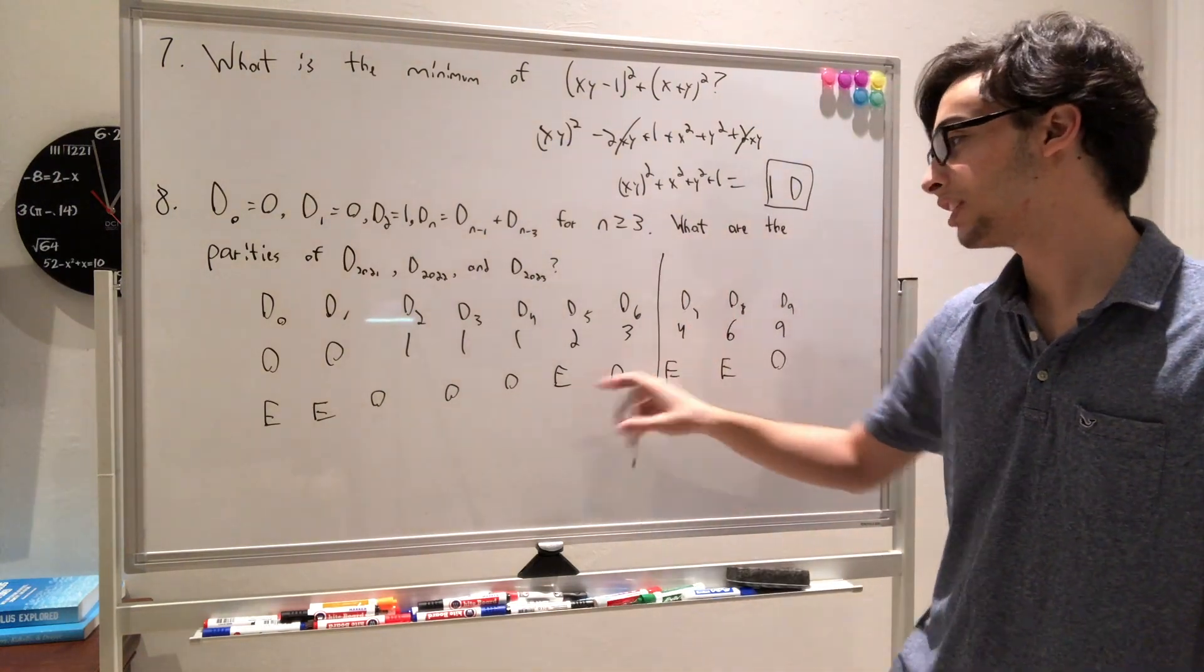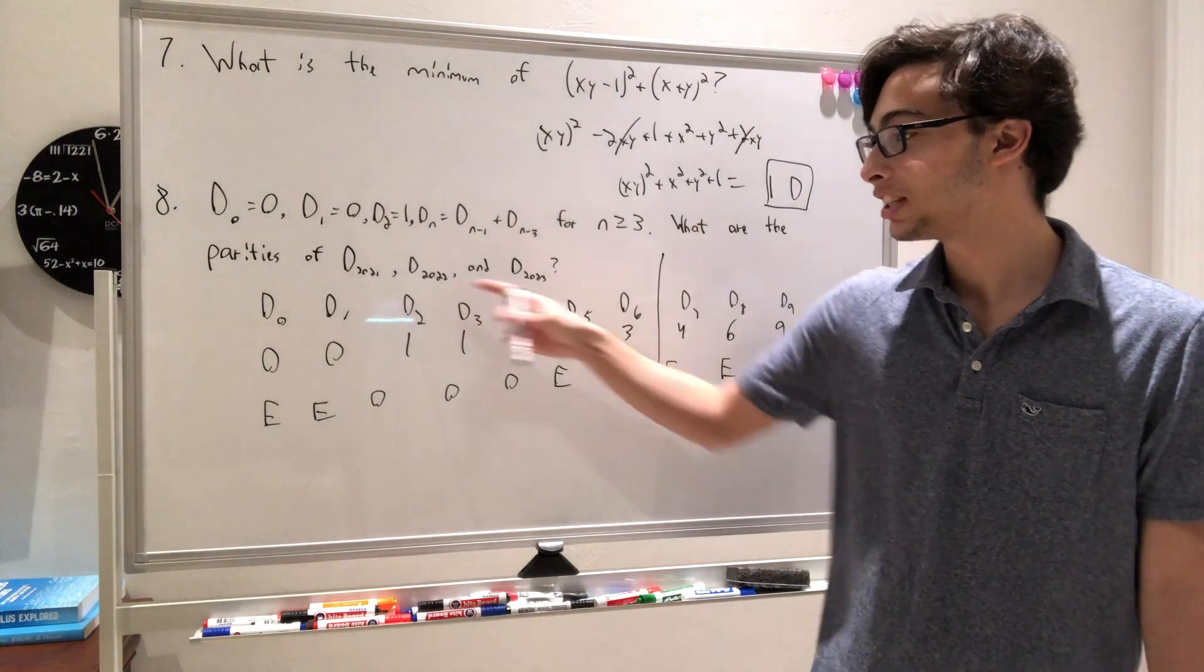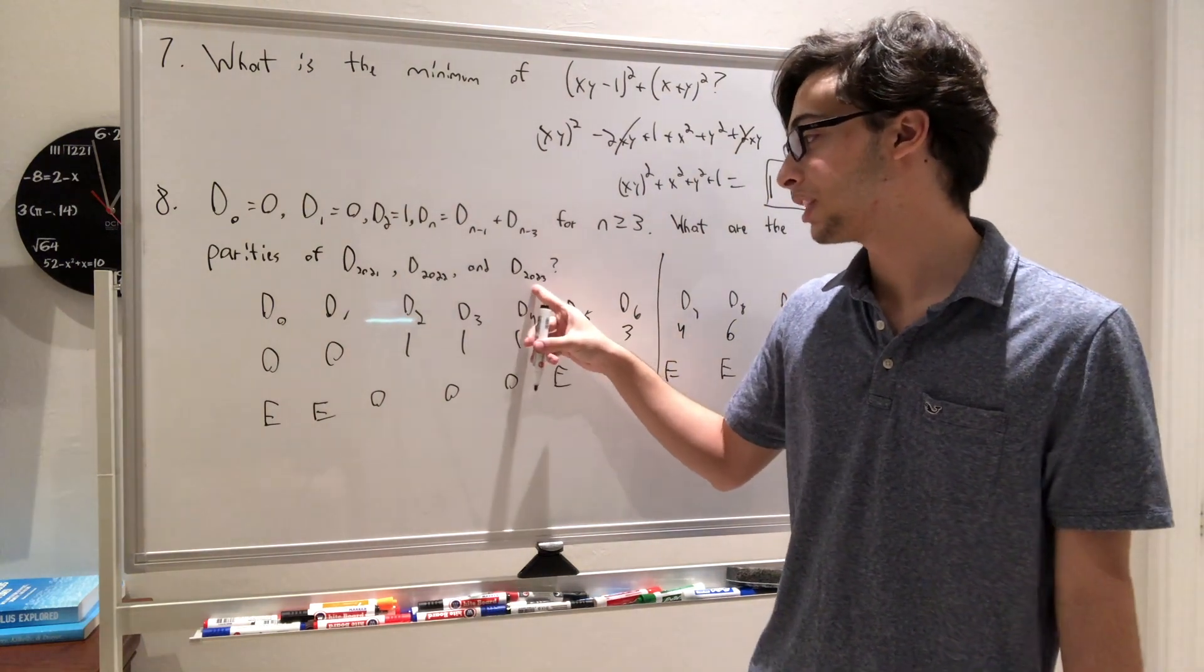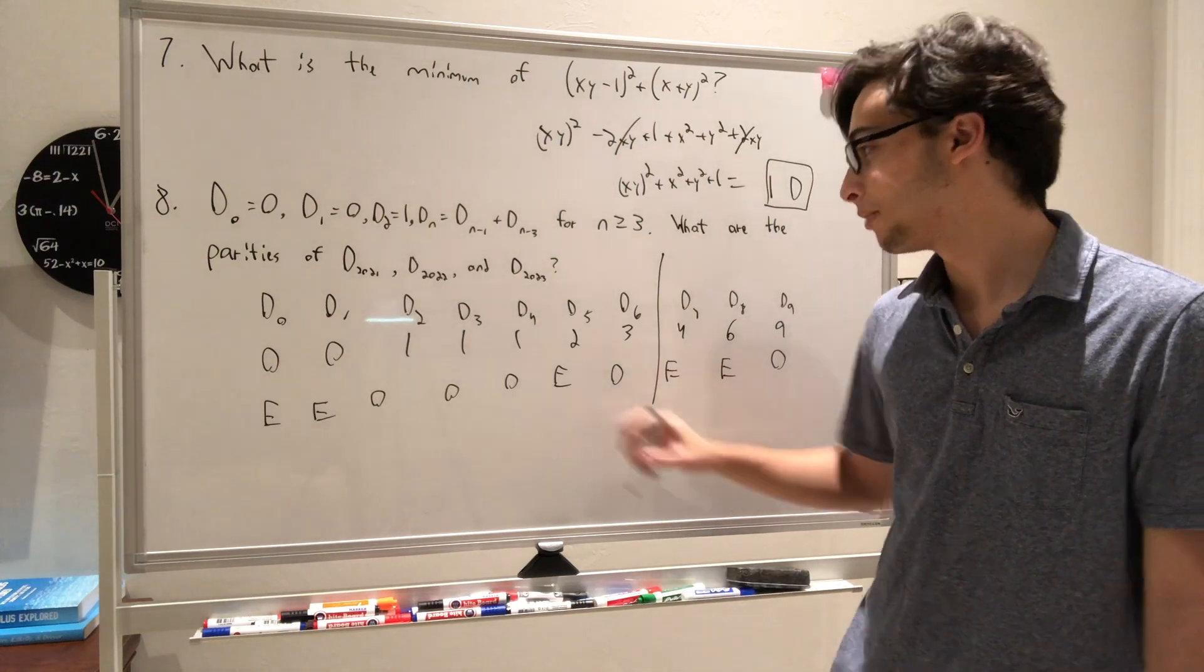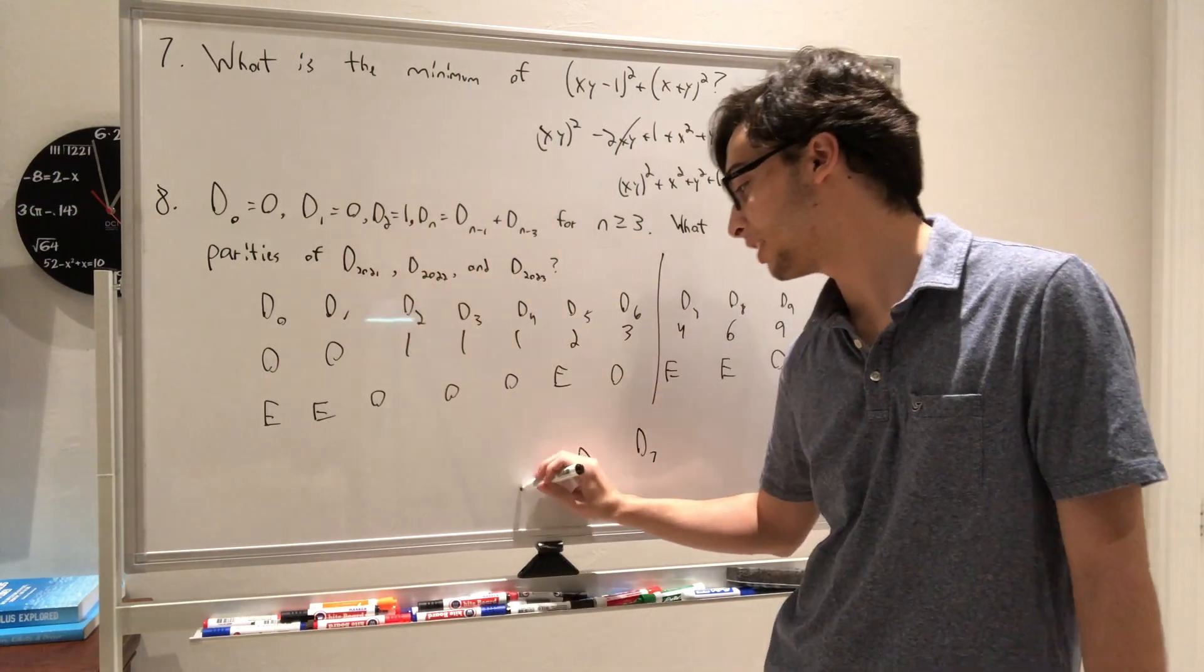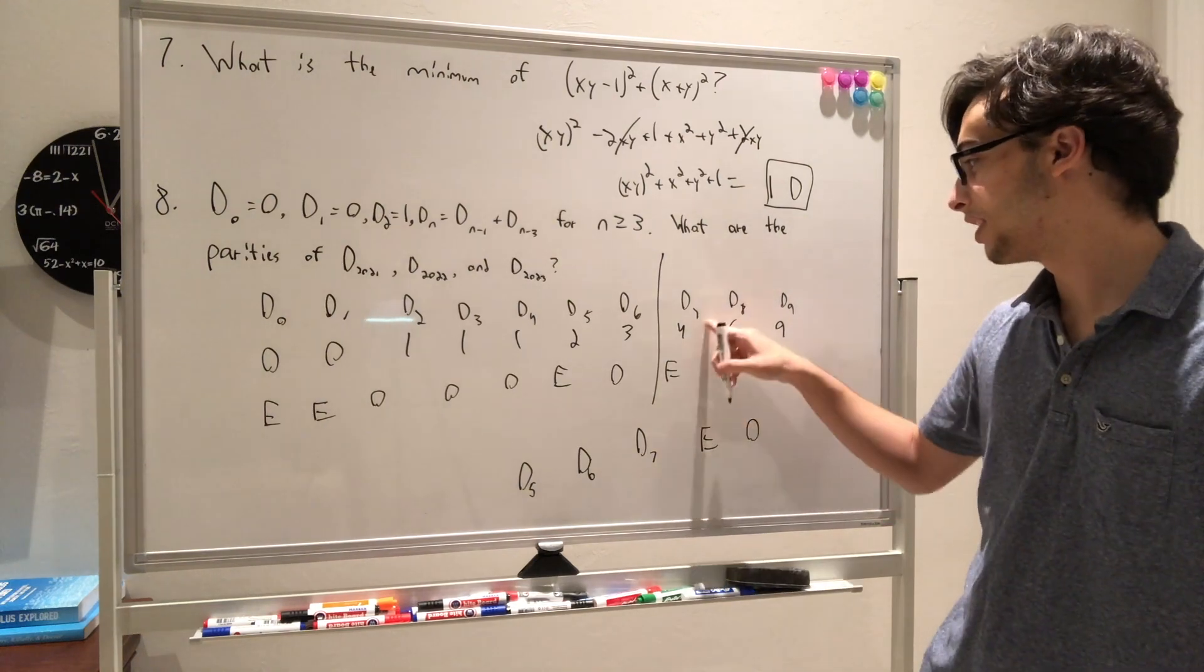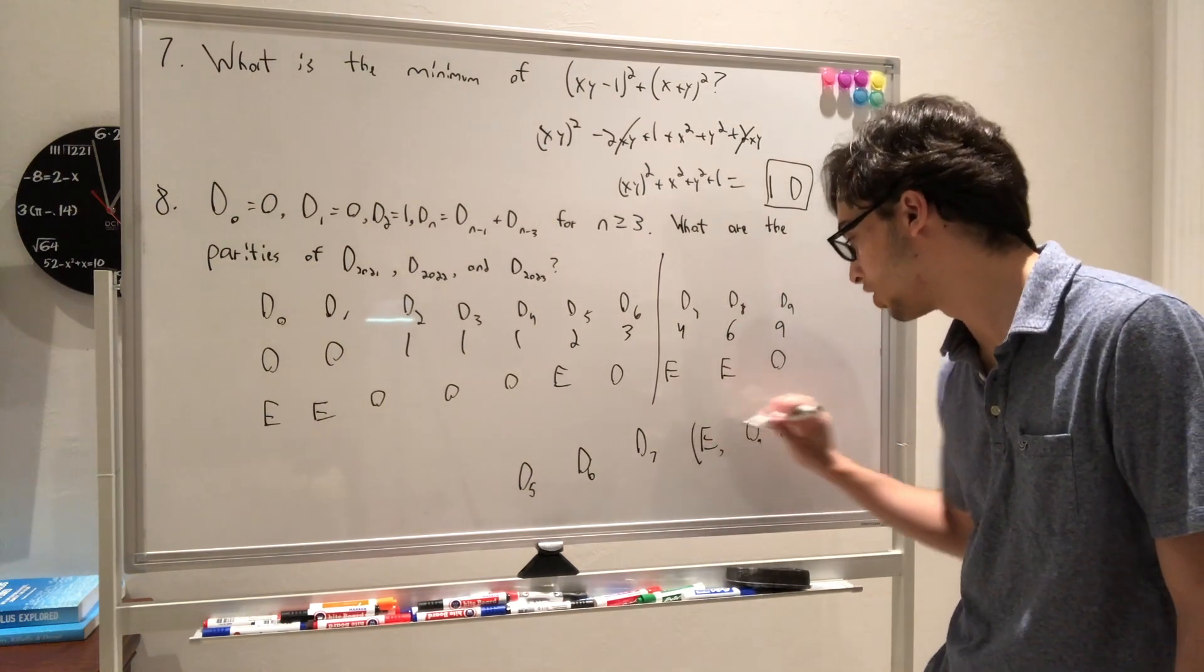Now, look at that, we have even, even, odd, and we have even, even, odd over here. So we see that it repeats every 7 terms. If this repeats every 7 terms, then these are really the same values as much lower. So we know that 2023 is divisible by 7, so D of 2023 is going to be the same thing as D of 7. And then we have that 2022 is going to be the same thing as D of 6, and 2021 is going to be the same thing as D of 5. Well, D of 5 is even, D of 6 is odd, and D of 7 is even. So that's our answer. We have even, odd, even, which is answer choice C.